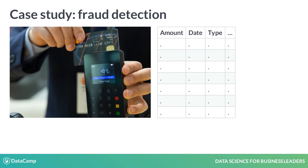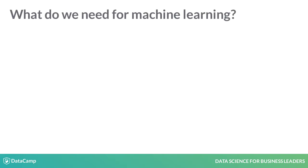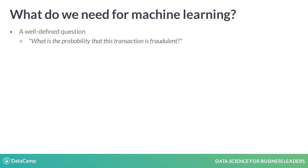These records are called training data and are used to build an algorithm. Each time a new transaction occurs, you'll give your algorithm information like amount and date, and it will answer the original question: what is the probability that this transaction is fraudulent? Before we can answer that question, let's walk through our example and highlight what we need for machine learning to work. First, a data science problem begins with a well-defined question. Our question was: what is the probability that this transaction is fraudulent?